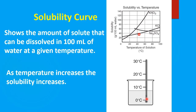A solubility curve shows the amount of solid that can be dissolved in 100 milliliters of water. As we increase temperature on our x-axis, the solubility of the substances will increase — that is, how much of the solute can we dissolve in 100 milliliters of water at a particular temperature. For example, at 40 degrees Celsius, the solubility of potassium nitrate has increased, and at 60 to 65 degrees it is still increasing. So as temperature increases, solubility increases — they're directly proportional in most cases.